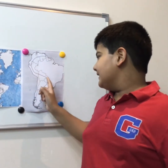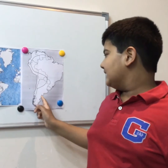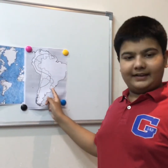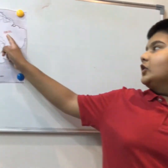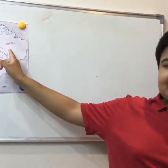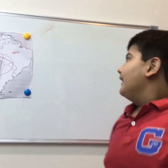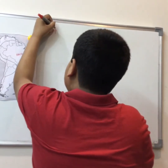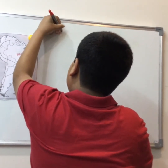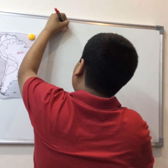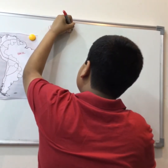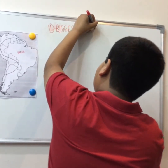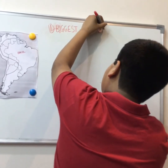There are 13 countries in South America. This S covers all 12 of them except Uruguay. The biggest country is Brazil. B for biggest and B for Brazil — not largest, but biggest.